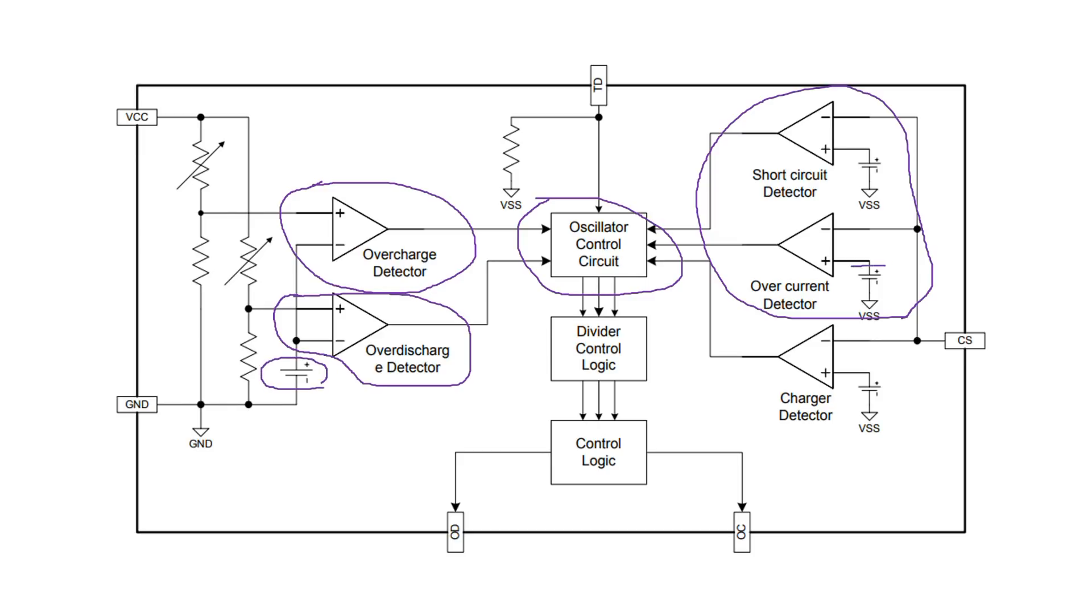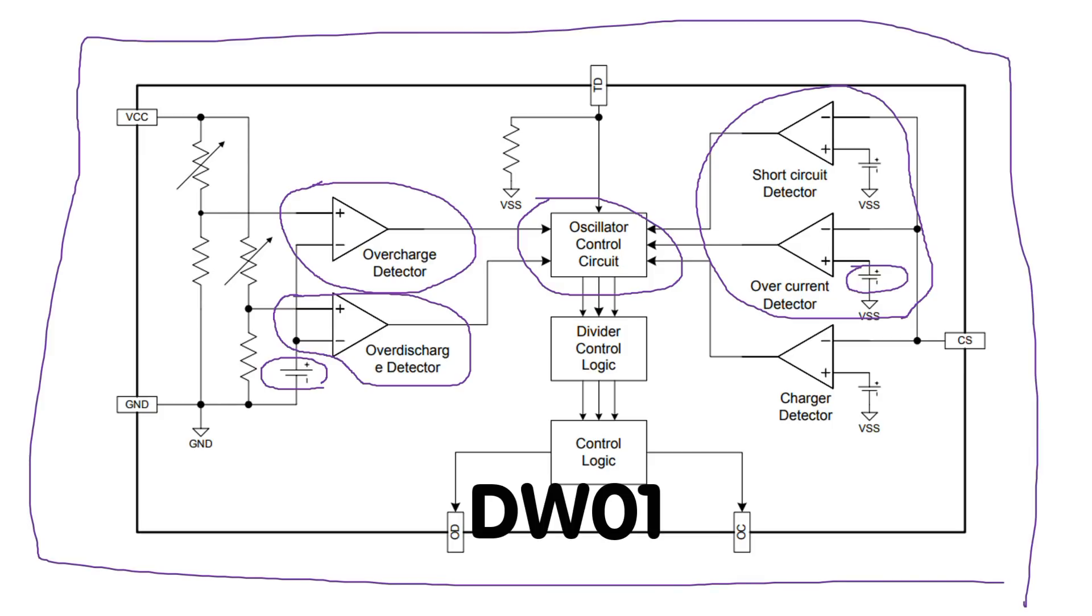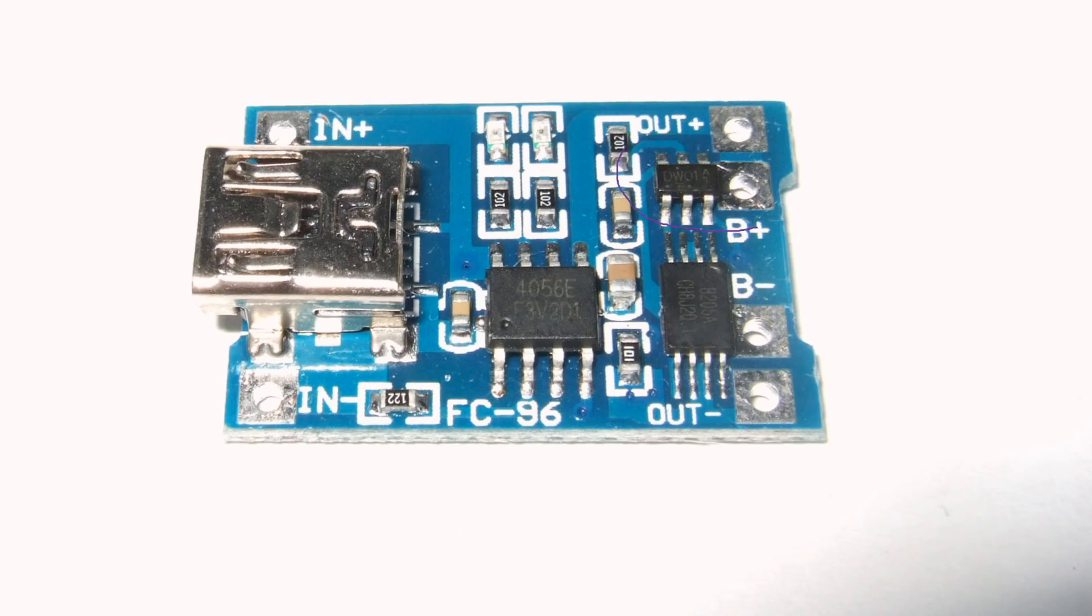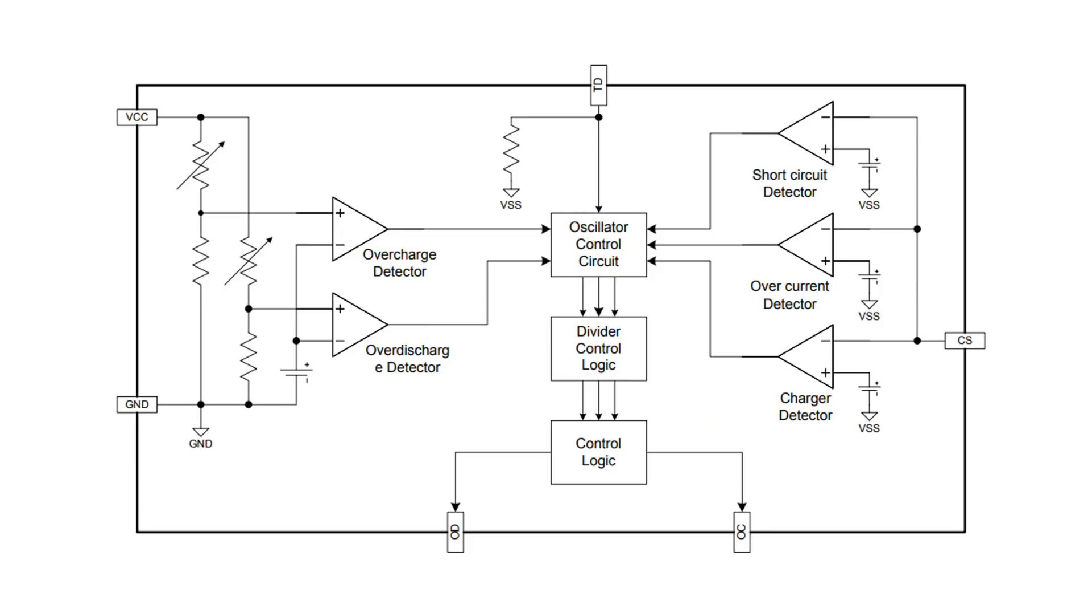You see, this is not a simple task. Fortunately, we can buy a small chip with all these ingredients for a few cents. It is called DW01 and is widely used, for example, in these LiPo charger circuits. We connect it to our battery and get two output signals, OD for discharge control and OC for charge control.